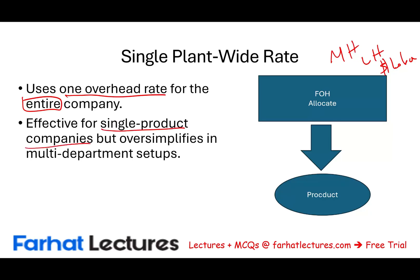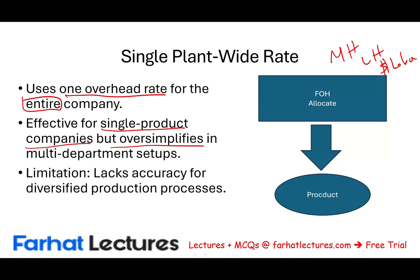Most companies produce more than one product, and the single plant-wide rate oversimplifies a multi-department setup. It's simple to implement — for example, you use labor across the whole organization, and the more labor you consume, the more overhead is allocated to your department. Or you could use machine hours. However, the limitation of this single plant-wide rate is it lacks accuracy when you have more than one product or a diversified production process.